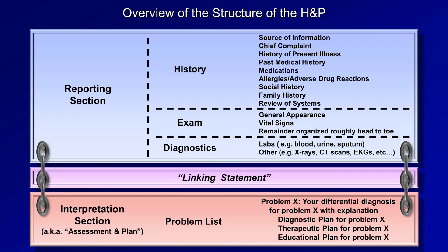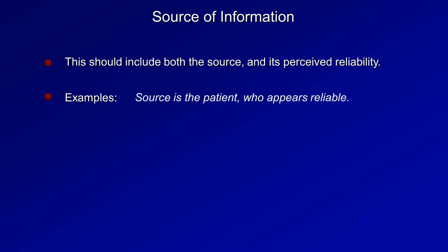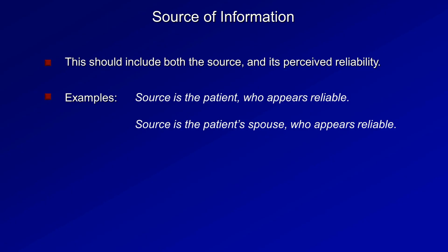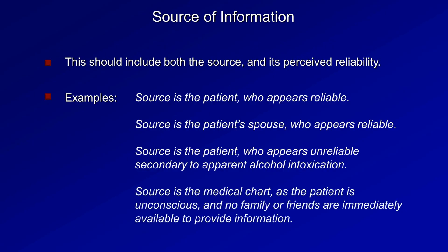The very first thing in the H&P should be a brief statement as to the source of information and the clinician's impression of the source's reliability. Examples include: source is the patient who appears reliable; source is the patient's spouse who appears reliable; source is the patient who appears unreliable secondary to apparent alcohol intoxication; or source is the medical chart, as the patient is unconscious and no family or friends are immediately available.